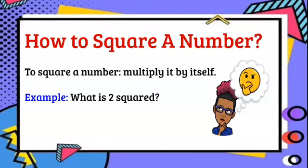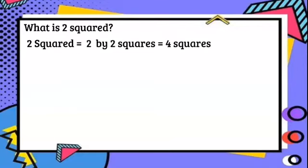Example: what is 2 squared? 2 squared is equal to 2 by 2 squares, which is going to equal 4 squares.